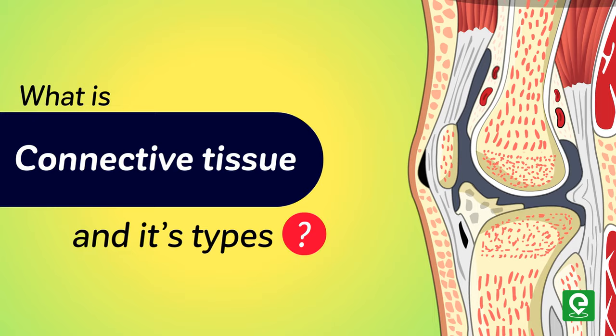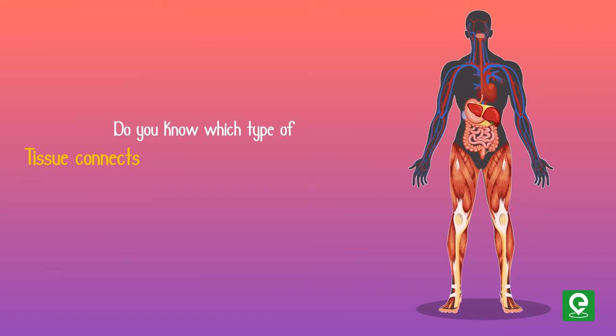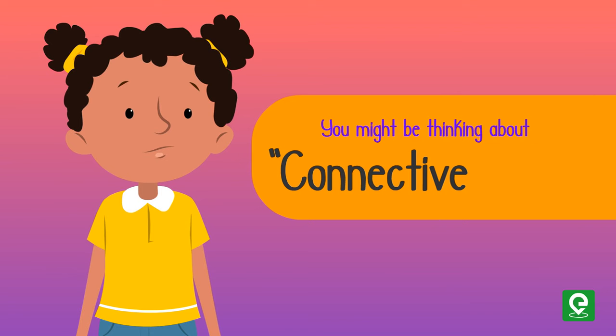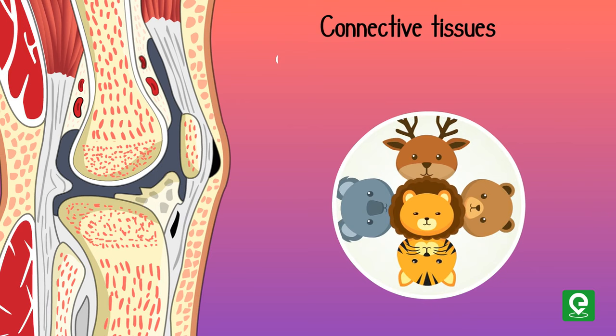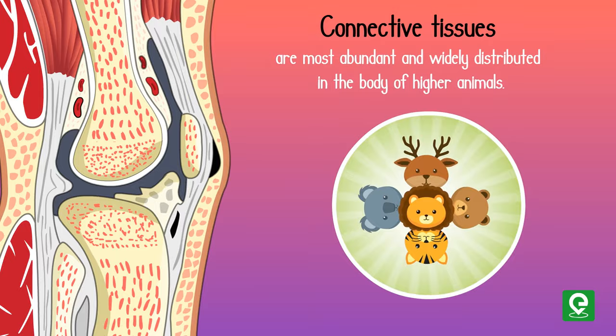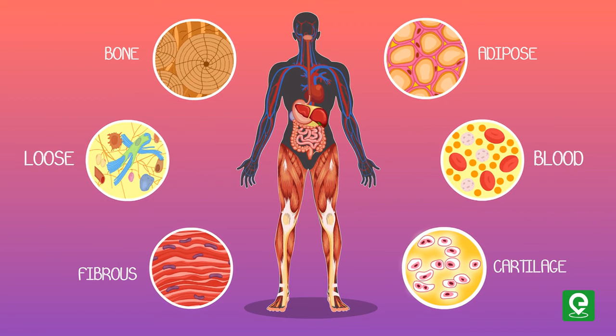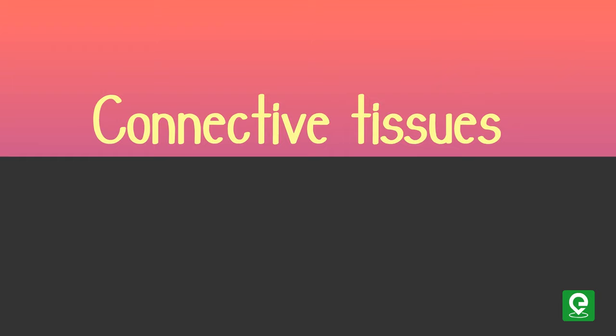What is connective tissue and its types? Do you know which type of tissue connects different organs of your body? You might be thinking about connective tissue. Yes, it's true — connective tissues are the most abundant and widely distributed in the body of higher animals. They are named connective tissues because of their special function of linking and supporting other tissues or organs of the body.